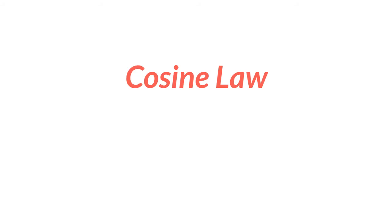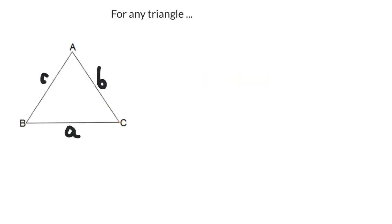The cosine law is another tool that you can use to determine lengths and sides in triangles. Triangles are usually labeled with capital letters for the angles and lowercase letters for the sides.